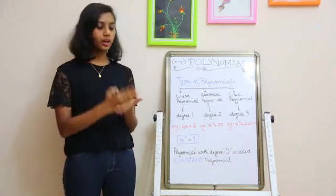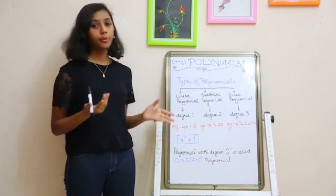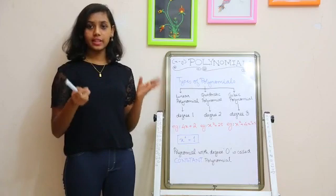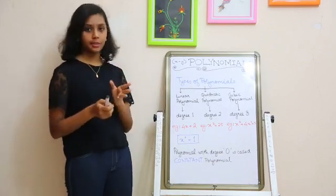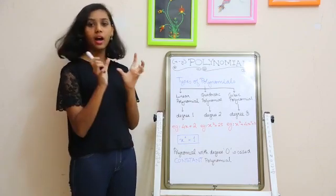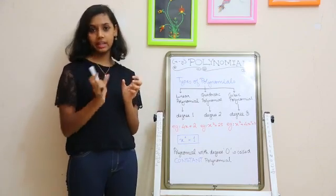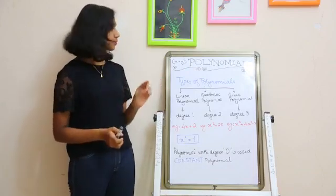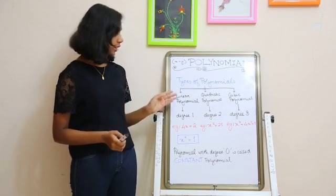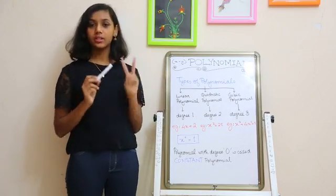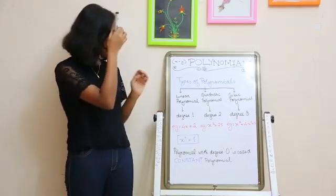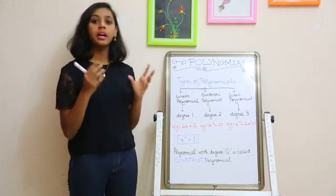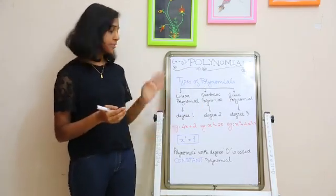Let's differentiate the three types. The degree is the highest power of that equation or expression. In a linear polynomial, linear means 1, so the highest degree will be 1. In a quadratic polynomial, quadratic means 2, so the highest degree is 2. In a cubic polynomial, cubic means 3, so the highest degree will be 3.